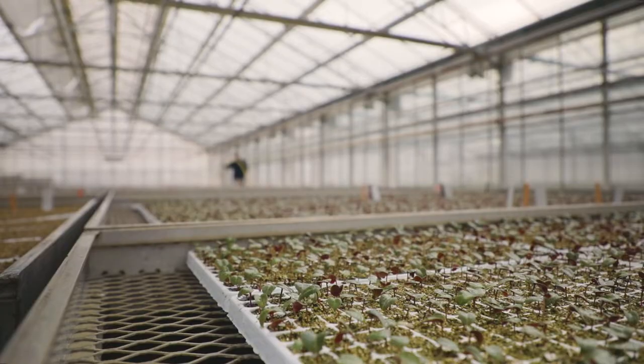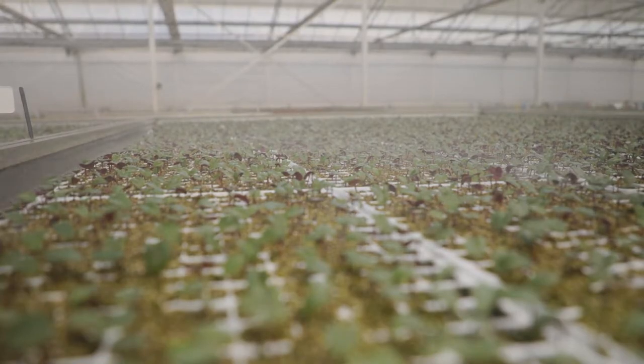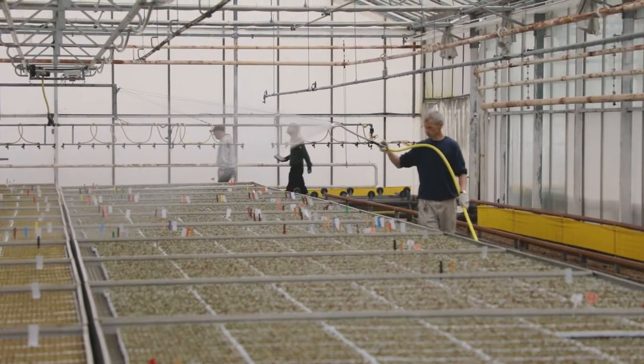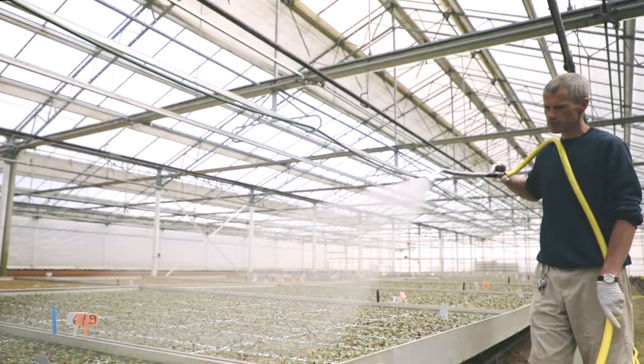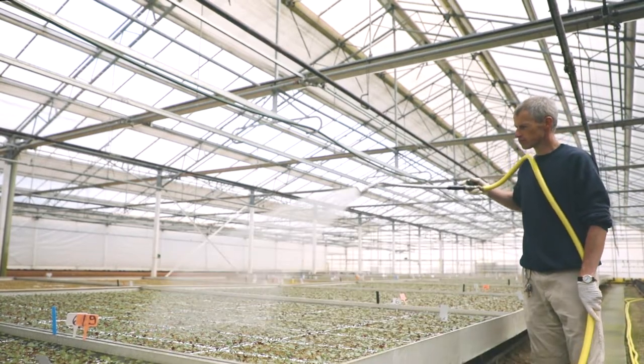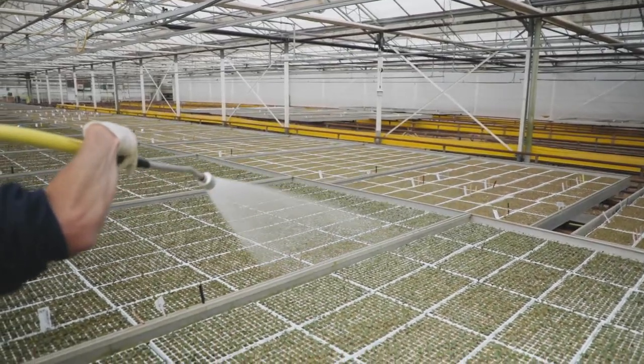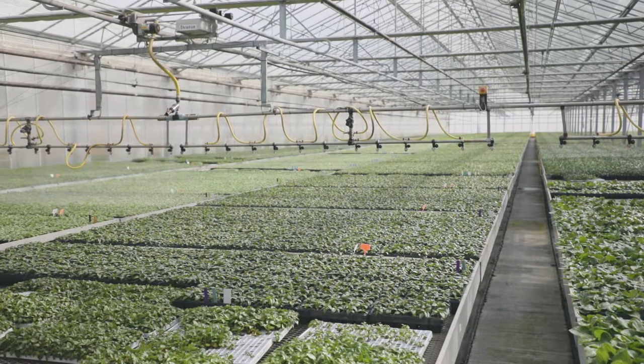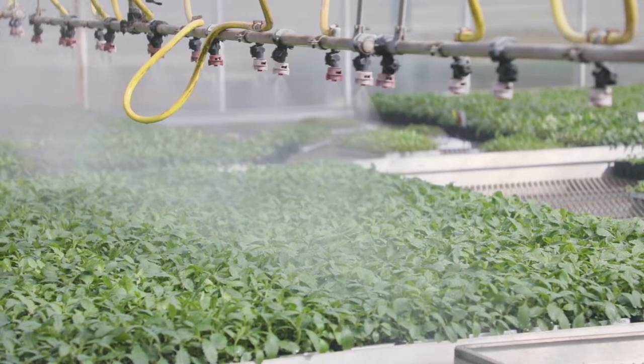On most ornamental nurseries the application of feed to crops is done by using a concentrated solution which is then run through a proportional diluter and either applied by hand through a rose at the end of the hose pipe or connected directly to boom application.